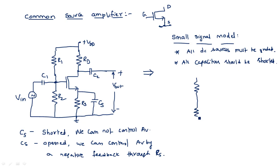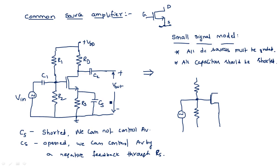With those two rules, let's redraw the circuit. R1 and R2 remain, and the coupling capacitors are removed. The coupling capacitor stops DC from entering the circuit. Since all capacitors are short-circuited, CS shorts RS as well, meaning the source terminal is connected directly to ground.